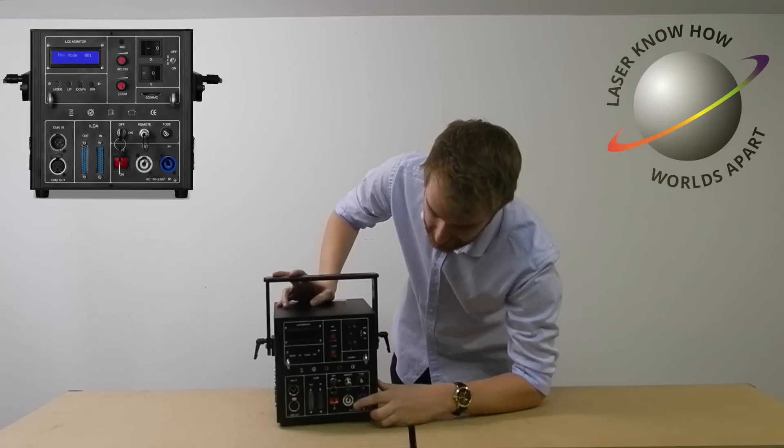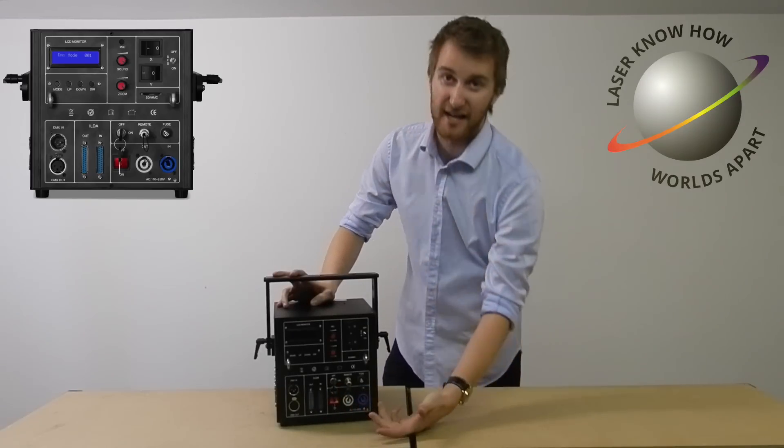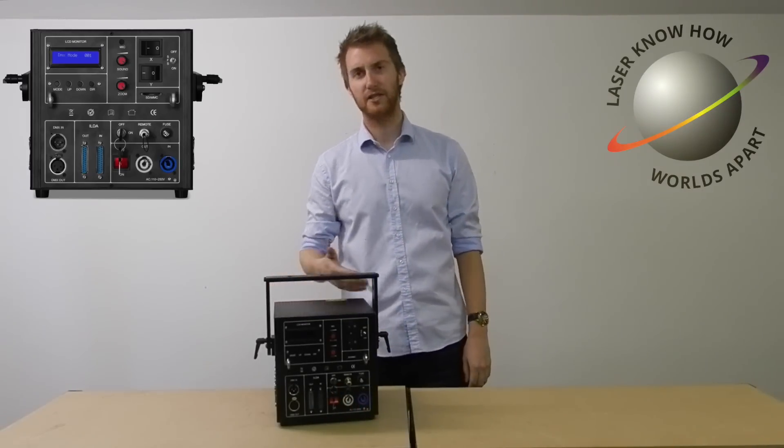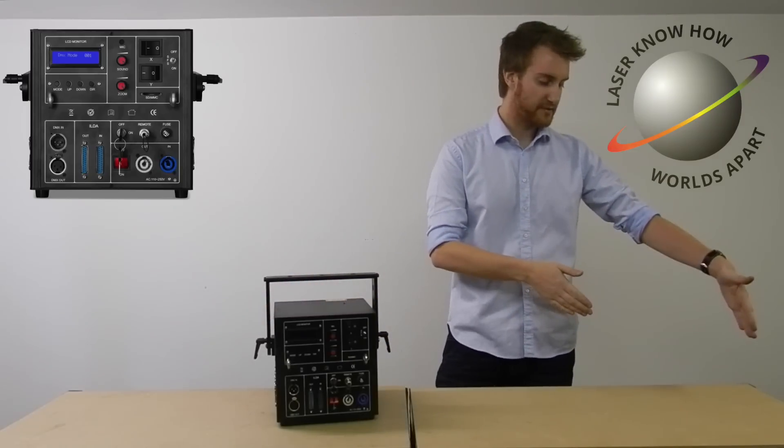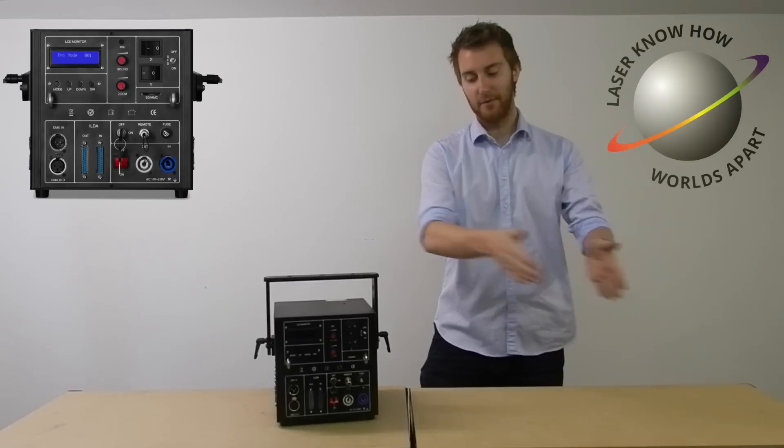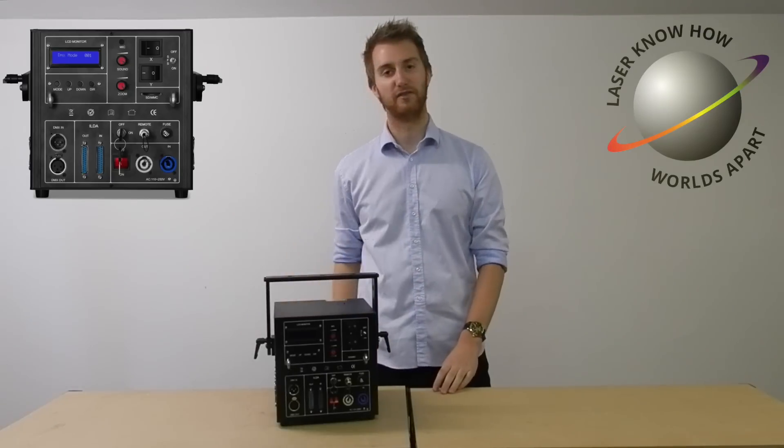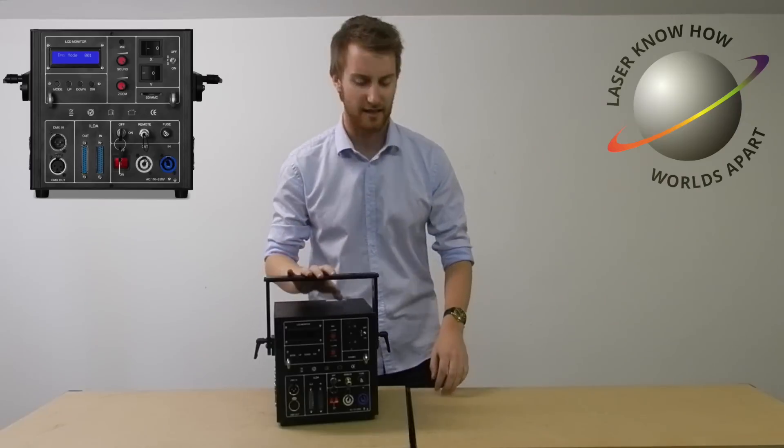You've also got PowerCon in and out there which is brilliant for daisy chaining. So let's say you bought two or three of these units, you've got them on stage and you want to just go into the first one, ILDA and power out of that one into the middle one and along further. It makes setup so much easier.